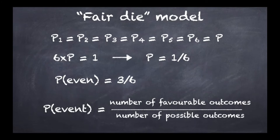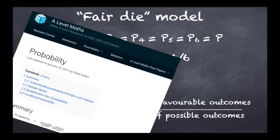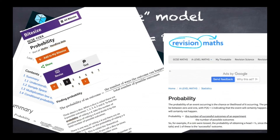That formula states: the probability of an event equals the number of favorable outcomes divided by the number of possible outcomes. For P(even), there are three favorable outcomes that are even, and six possible outcomes in total. So 3 over 6 satisfies this formula, and it is obviously very well used at the introductory level of probability theory.